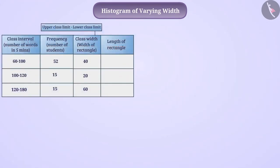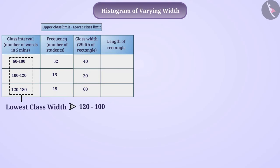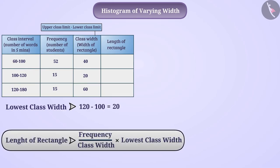For this, we find the lowest class width among all class intervals. Here the class interval 100 to 120 has class width 20, which is the minimum. We then find the length of each rectangle by dividing the frequency of that class interval by its class width, and then multiplying by the minimum class width.